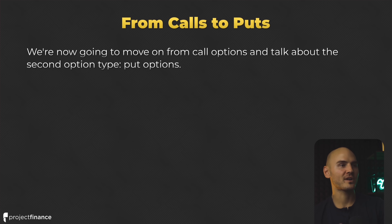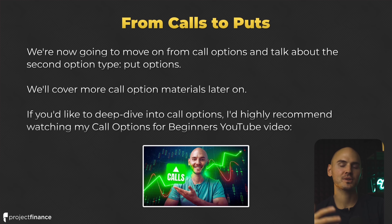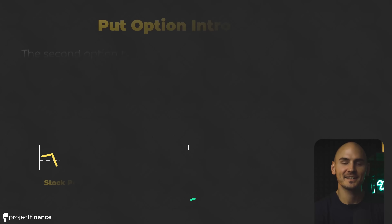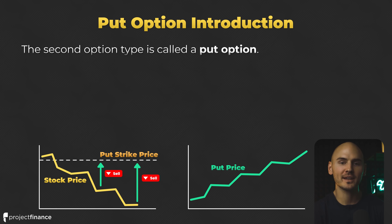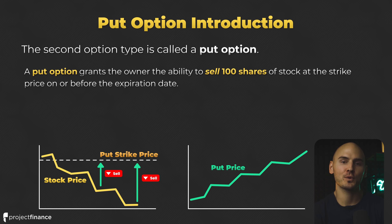At this point in the video, we are going to move on from call options and talk about put options. If you'd like a deeper dive into call options with a lot more examples, be sure to check out my call options for beginners video, which I will link in the description below. The second type of option is called a put option. A put option grants the owner the ability to sell 100 shares of stock at the strike price on or before the option's expiration date.